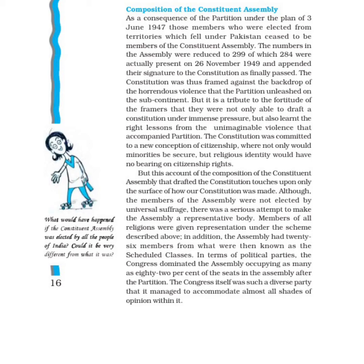But this account of the composition of the constituent assembly that drafted the constitution touched upon only the surface of how our constitution was made. Although the members of the assembly were not elected by universal suffrage, there was a serious attempt to make the assembly a representative body. Members of all religions were given representation. The assembly had 28 members from the scheduled caste, and in terms of political parties, the Congress dominated the assembly, occupying as many as 82% of the seats after the partition. The Congress itself was such a diverse party that it managed to accommodate almost all shades of opinion within it.